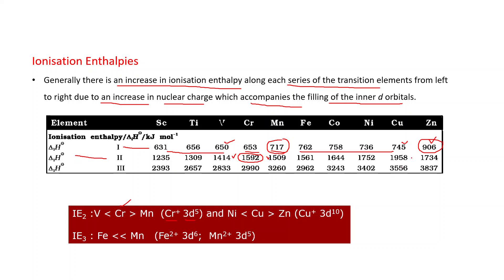Similarly, the second ionization enthalpy of copper is high compared to both nickel and zinc. The reason is that Cu+ has the 3d10 configuration, which is stable, making it difficult to remove the next electron.